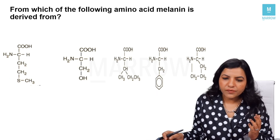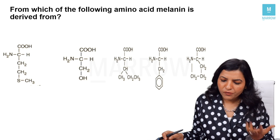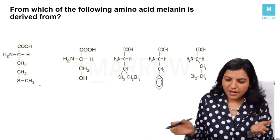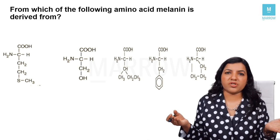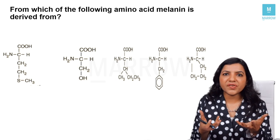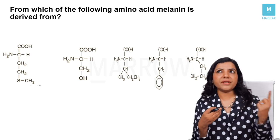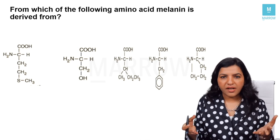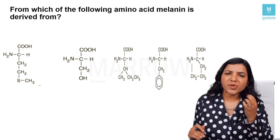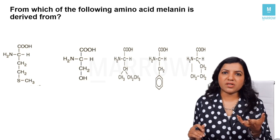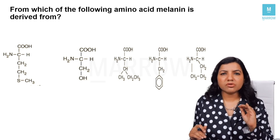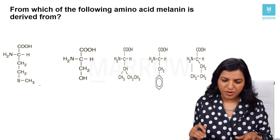If this kind of question is asked — from which of the following amino acids is melanin derived? — and you get a series of structures, you will be embarrassed thinking: how will I identify? You may know it is formed from phenylalanine and tyrosine, but cannot identify them from the structure. So how can we simply identify the structure? This is what we are going to learn. That is why we need to know about the chemistry of amino acids.